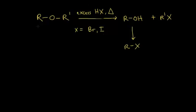So if we start with our ether over here on the left and we add excess hydrogen halide and we heat things up, the ether gets cleaved to form an alcohol and an alkyl halide. Normally, the reaction conditions will then convert that alcohol into yet another alkyl halide, so you will usually end up with two alkyl halides as your product. However, not always.